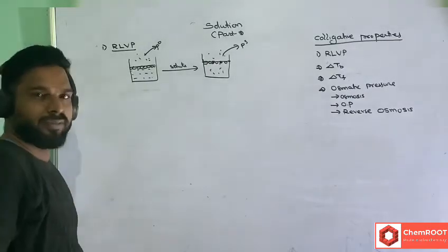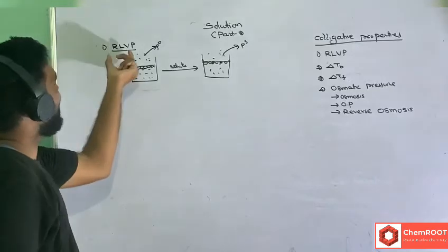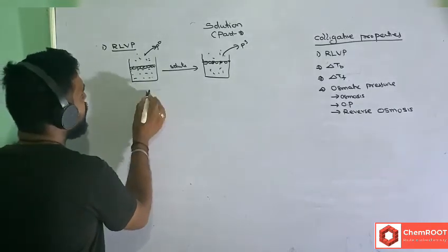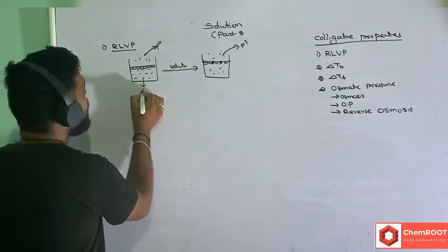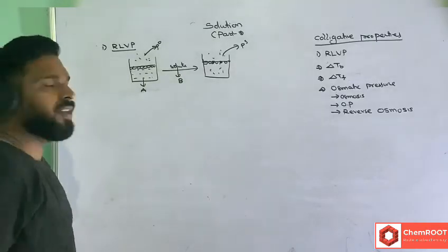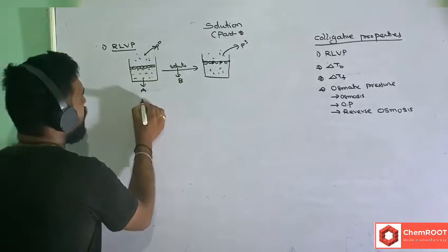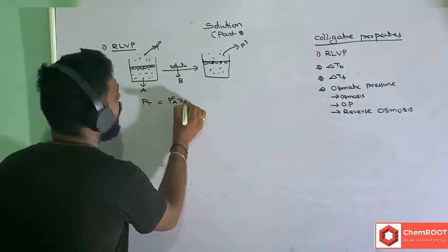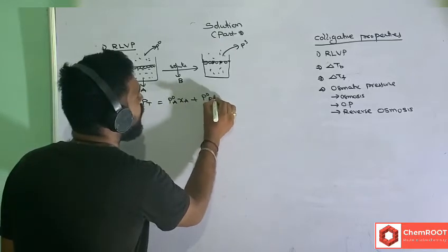The lowering of vapor pressure relative to the initial pressure is called the relative lowering of vapor pressure. Taking A as the solvent and B as the solute, for an ideal solution: P_total = P0_A · χ_A + P0_B · χ_B.